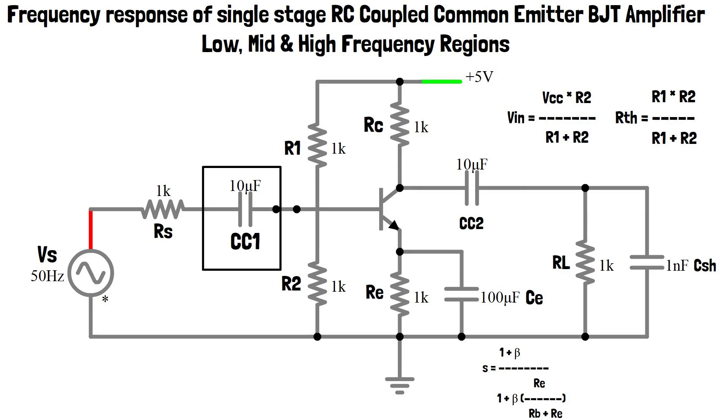CC1 and CC2 are called as coupling capacitors. They are used to couple signal sources and load, so that the DC bias of the BJT is unaltered. RS and RL are signal resistance and load resistance.